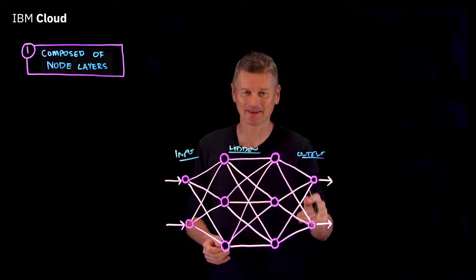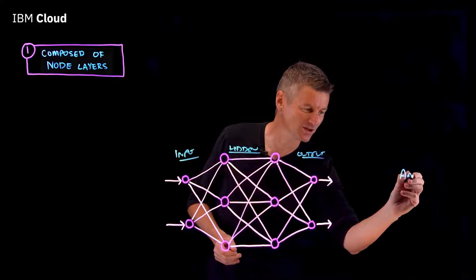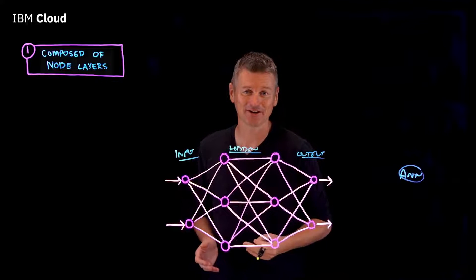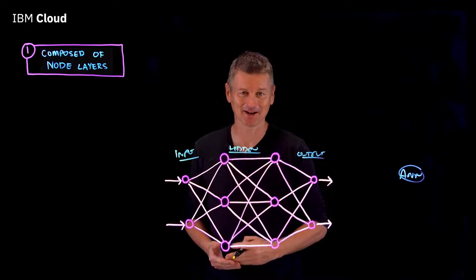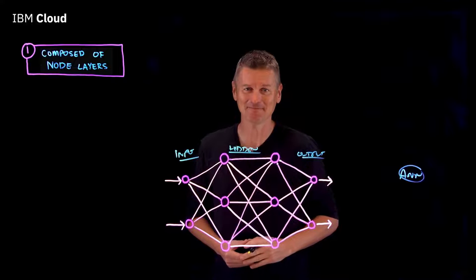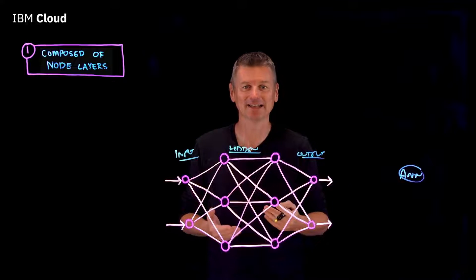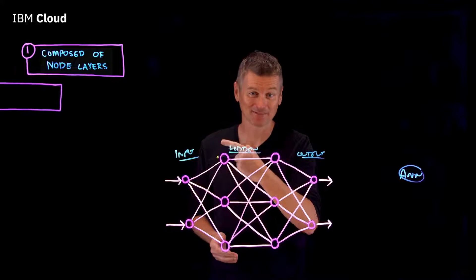In fact, we should be describing this as an artificial neural network, or ANN, to distinguish it from the very unartificial neural network operating in our heads. Now, think of each node or artificial neuron as its own linear regression model. That's number two.